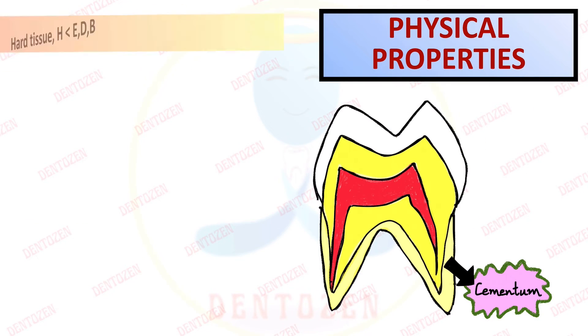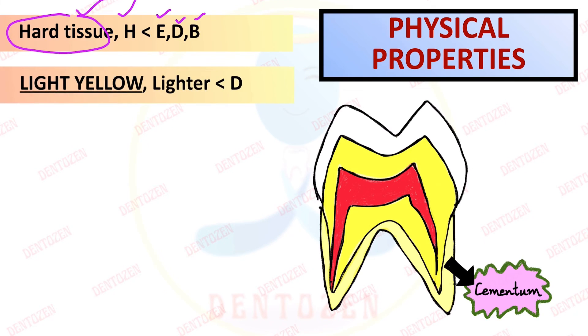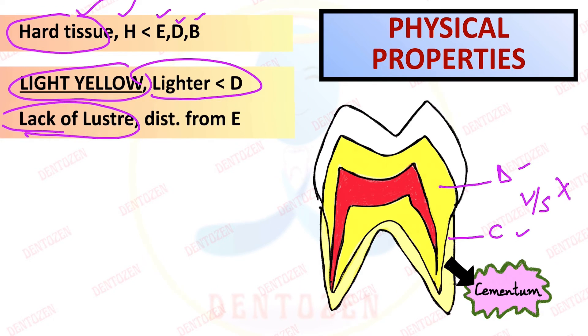Now let's talk about the physical properties of cementum. First, its hardness. It is a hard tissue, but its hardness is less than all other mineralized tissues, enamel and dentine. If we talk about its color, it is light yellow in color as we can see here, and it is lighter than dentine. But clinically we cannot differentiate cementum from dentine because the difference in color is very less. Then it lacks luster, that means it is not shiny, it is dull, because of which we can distinguish it from enamel.